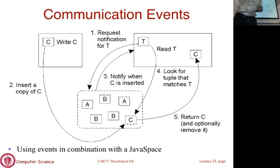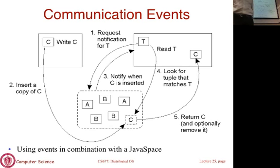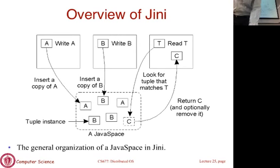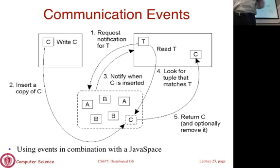You can also specify callbacks in this system. Not only can you publish data, you can say: 'If data of this type is published, notify me.' For example: 'If a printer shows up, send me a message.' That callback is registered so whenever a matching data item is inserted into the bulletin board, you get a notification. This way you don't have to keep actively querying — you specify your interest and the tuple space notifies you when a matching message arrives.